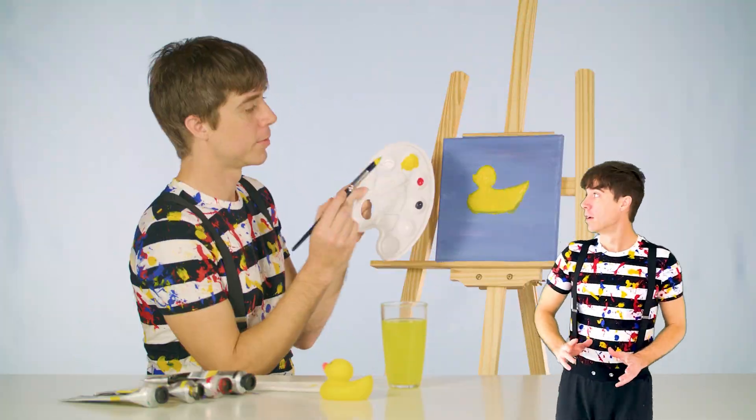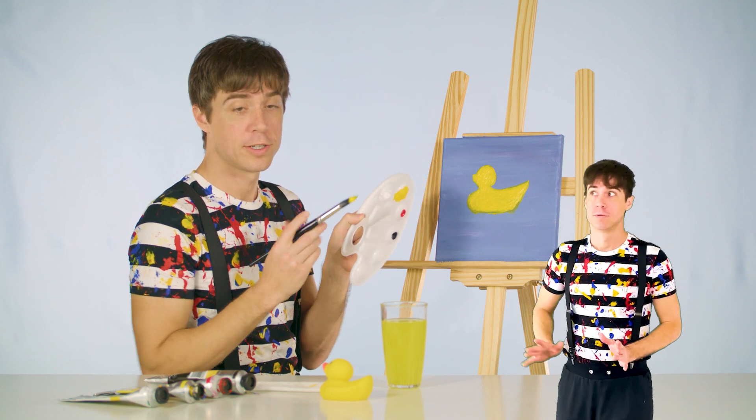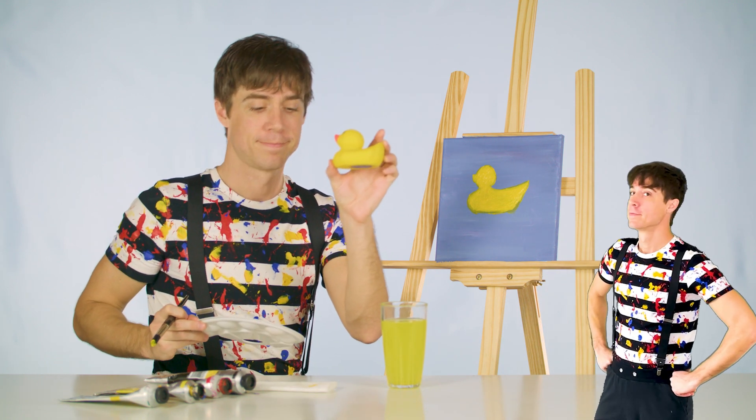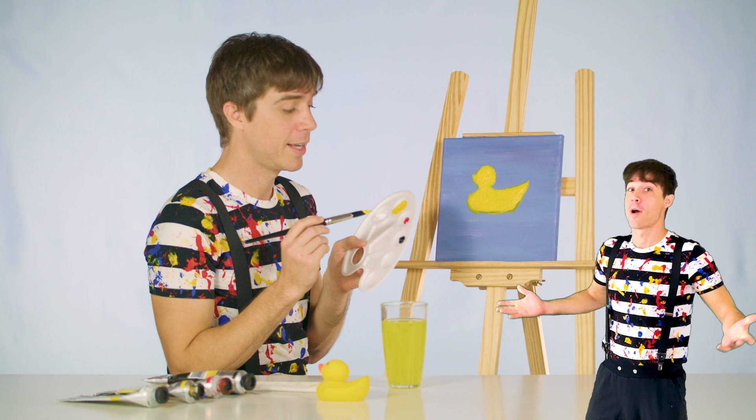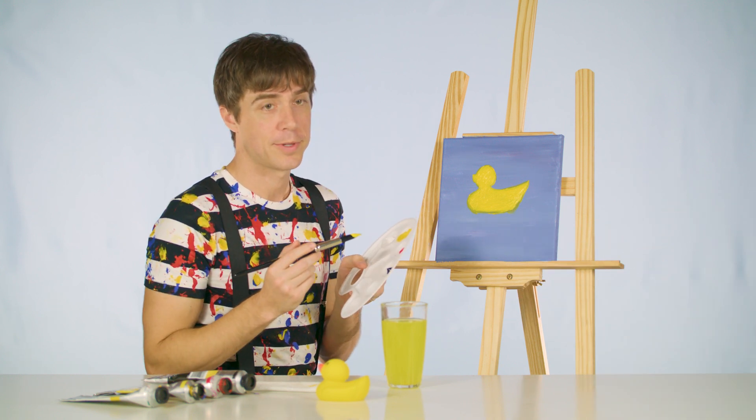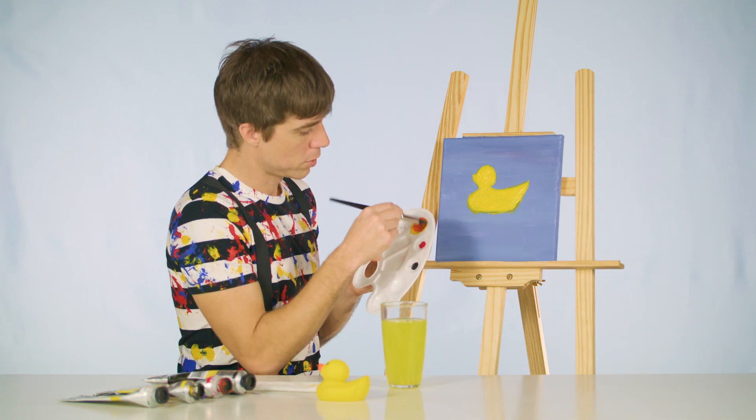Now we need to mix red and yellow to make orange to put his beak on. Let's put a little bit of red in with the yellow and see what happens. Wow.